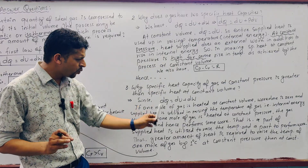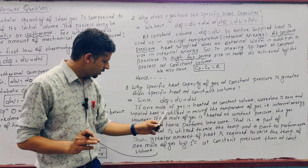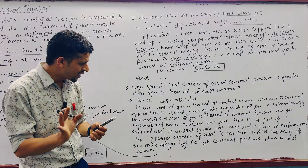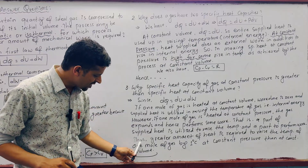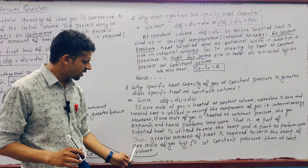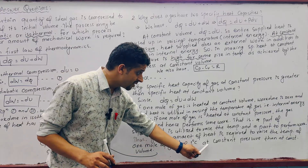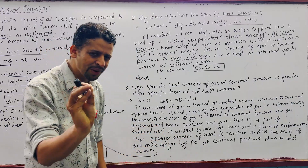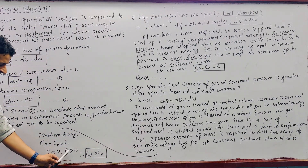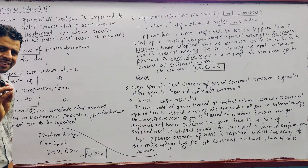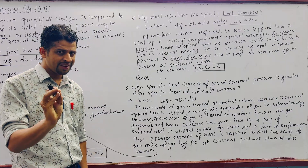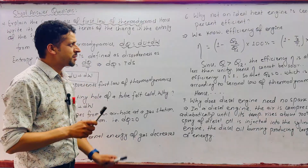But if one mole of gas is heated at constant pressure, the supplied heat is used in raising internal energy and also in doing external work. Thus, a greater amount of heat is required to raise the temperature by one degree at constant pressure than at constant volume. Mathematically, Cp = Cv + R; since R > 0, Cp > Cv.